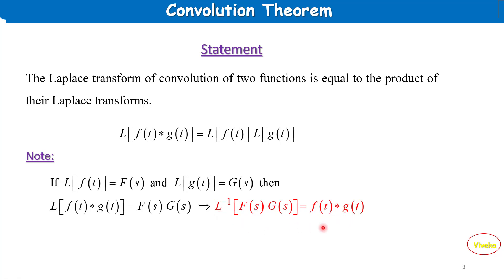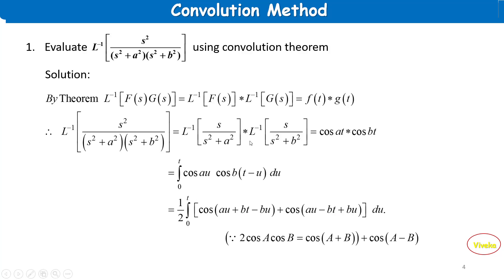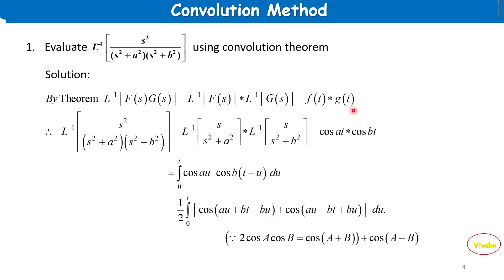Problem 1: Evaluate L⁻¹{ s² / [(s²+a²)(s²+b²)] } using the convolution theorem. Solution: We use the formula L⁻¹{F(s)·G(s)} = L⁻¹{F(s)} * L⁻¹{G(s)} = f(t) * g(t).